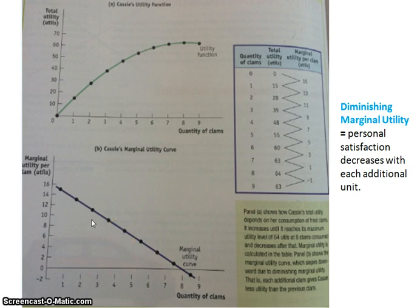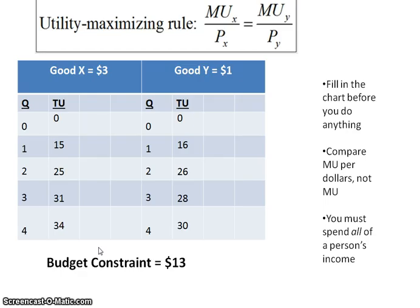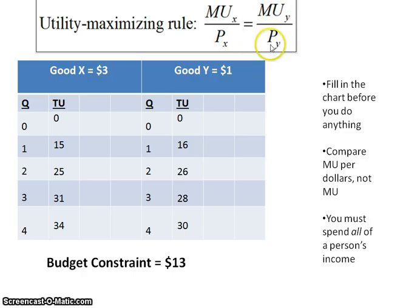We don't usually just buy one thing at a time, so we need to go beyond marginal utility equals price to figure out how much somebody will buy. If you're looking at consuming two products at the same time, you use the formula: marginal utility per dollar of X must equal marginal utility per dollar of Y. When these ratios equal one another, that maximizes personal satisfaction.